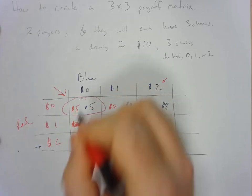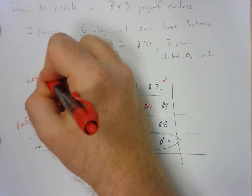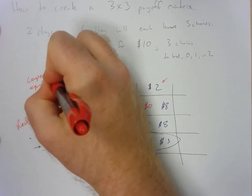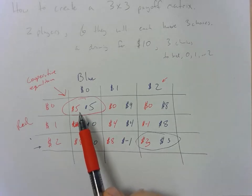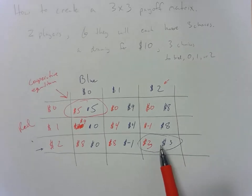However, if they could just talk and coordinate they could get to this equilibrium right here which would be the cooperative equilibrium. You can see that both of the payoffs are higher in this cell than they are in the cell right here where they both end up with three dollars.